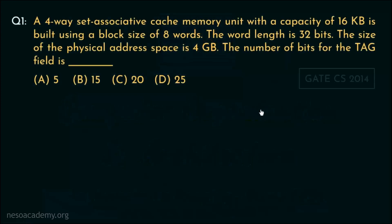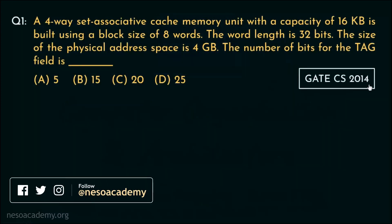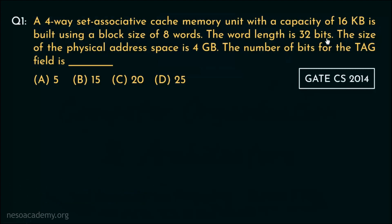Consider this question — it came in the GATE Computer Science 2014 paper. A four-way set associative cache memory unit with a capacity of 16 kilobytes is built using a block size of 8 words. The cache memory size is 16 kilobytes, the block or line size is 8 words, and it's a four-way set associative cache. The word length is given as 32 bits, and the physical address space is 4 gigabytes — meaning the main memory size is 4 gigabytes.